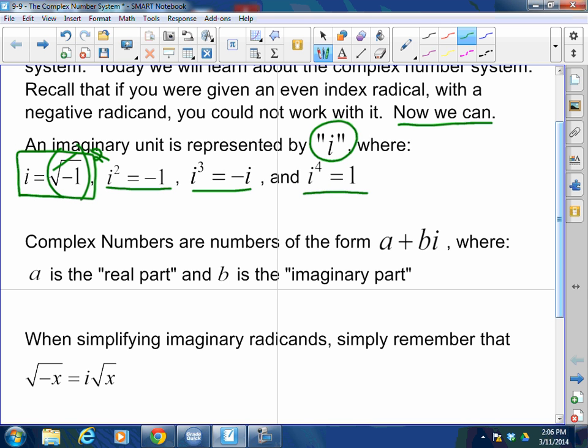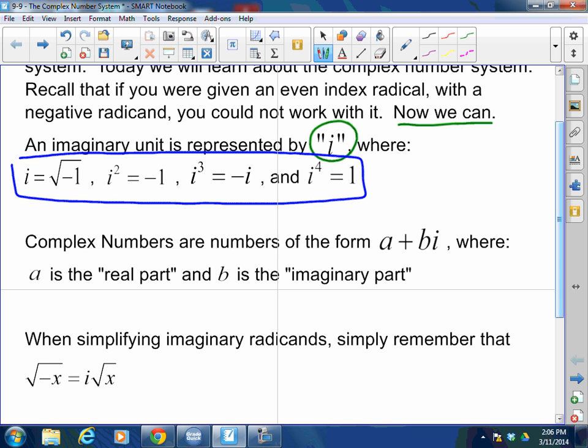And if I take that negative i and multiply it by another i, I'm going to get negative 1 times a negative 1, which is 1. These four you want to commit to memory. You want to own this forever. Really important. So these are the imaginary units.